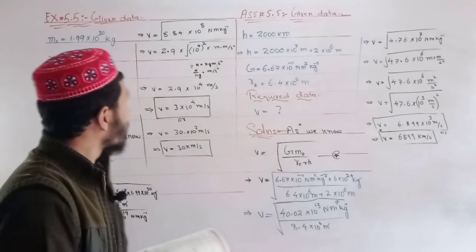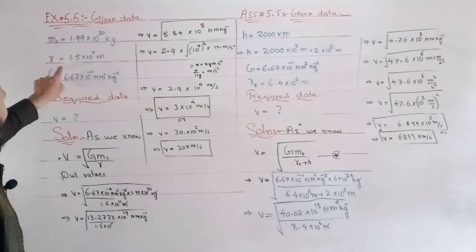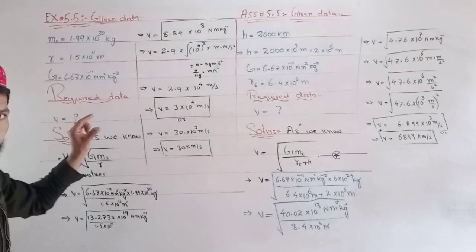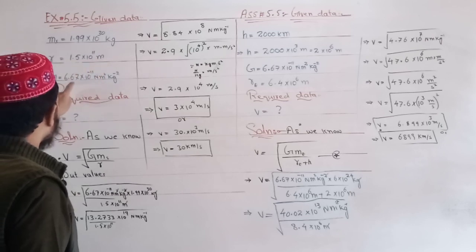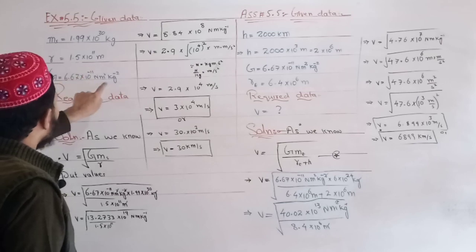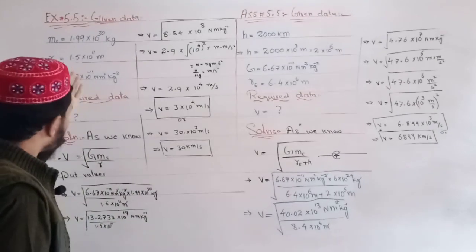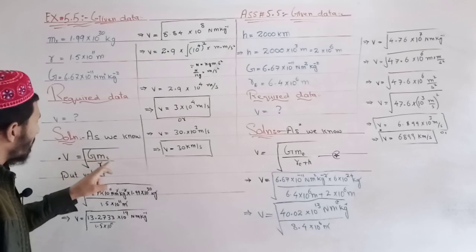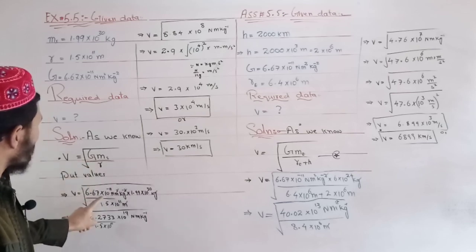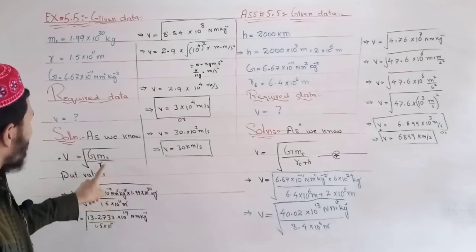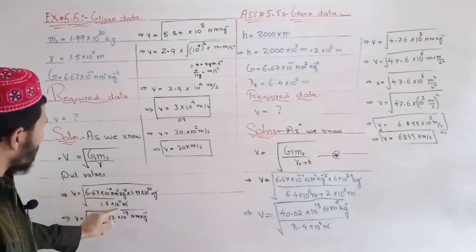The mass of the Sun is 1.99 × 10^30 kg, the radius of Earth's orbit is 1.5 × 10^11 meters, and the gravitational constant G is 6.67 × 10^-11 N·m²/kg².